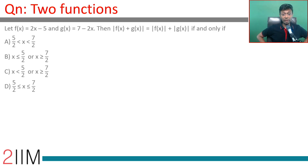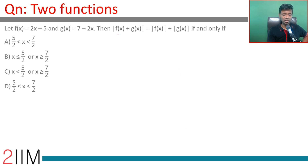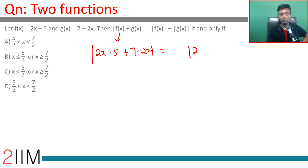Let f(x) = 2x - 5 and g(x) = 7 - 2x. Then |f(x) + g(x)| = |f(x)| + |g(x)| if and only if... so let's work on this. This is easy to form: |2x - 5 + 7 - 2x| = |2x - 5| + |7 - 2x|.